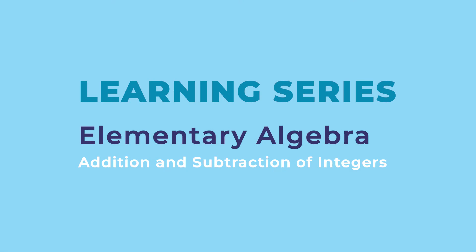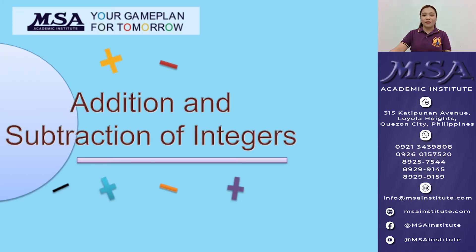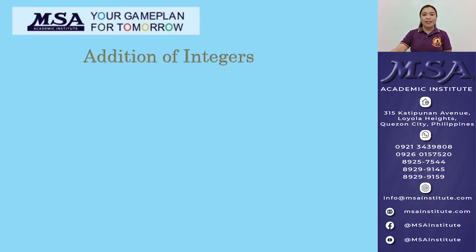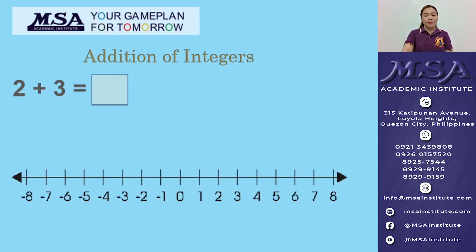Alright, let's discuss first addition of integers. Let's say we have 2 plus 3. Of course, you know the answer. But I will use a number line to illustrate how to add integers. First, plot 2 on the number line. And then, add positive 3.